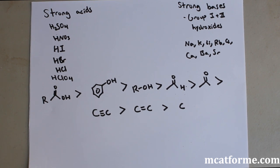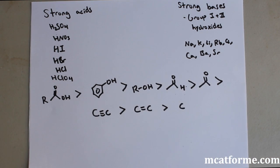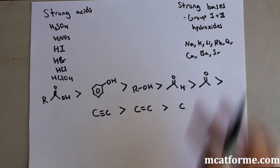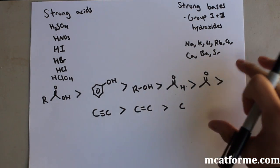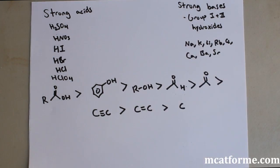So just have these basic trends down — memorize this list and keep in mind the acidity trends involving resonance, positive charge, inductive effect, and periodic table position. But having this entire page memorized is really where you'll get your points.